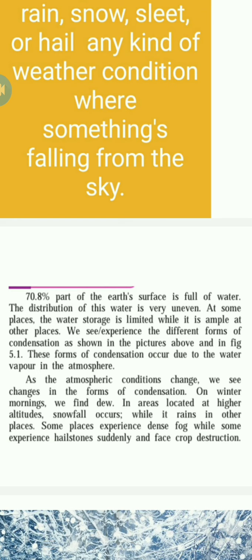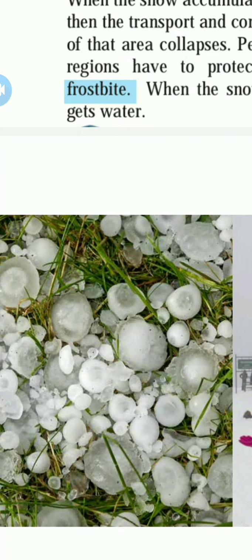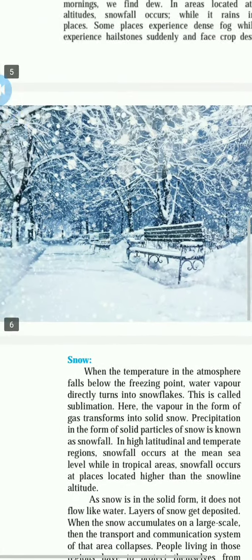Some places experience dense fog, while some experience hailstones suddenly, causing crop destruction. When snowfall does not form properly, it comes in the form of hailstones. Hailstones are very small ice pieces, round in shape, that fall from the sky.